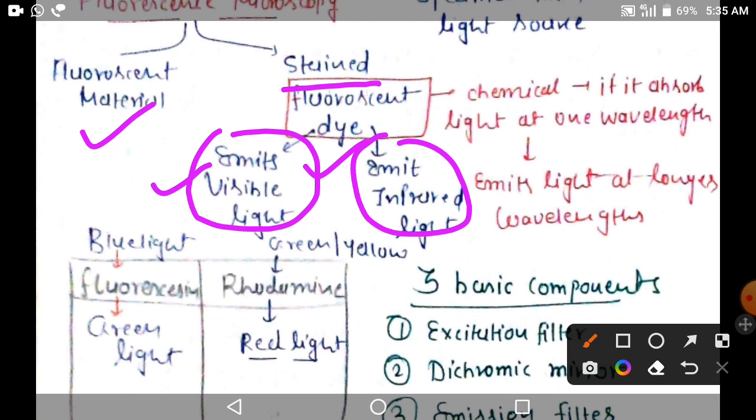Fluorescent dye is one type of chemical which absorbs light at one wavelength. It will absorb the light from the light source and emit longer wavelength light. The dye gets excited by light and converts to longer wavelength through the fluorescent dye.